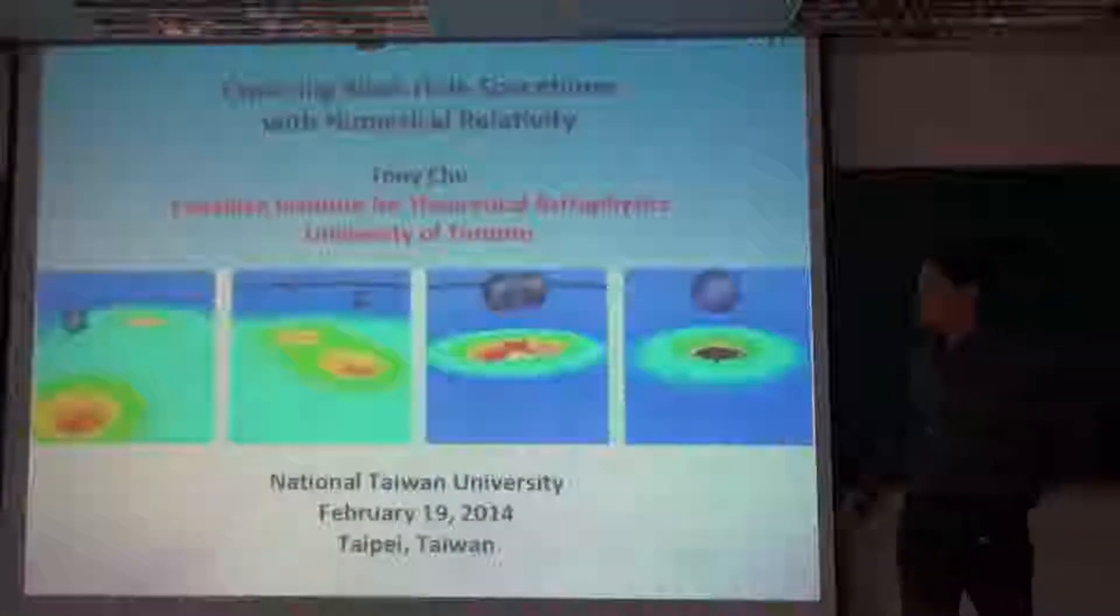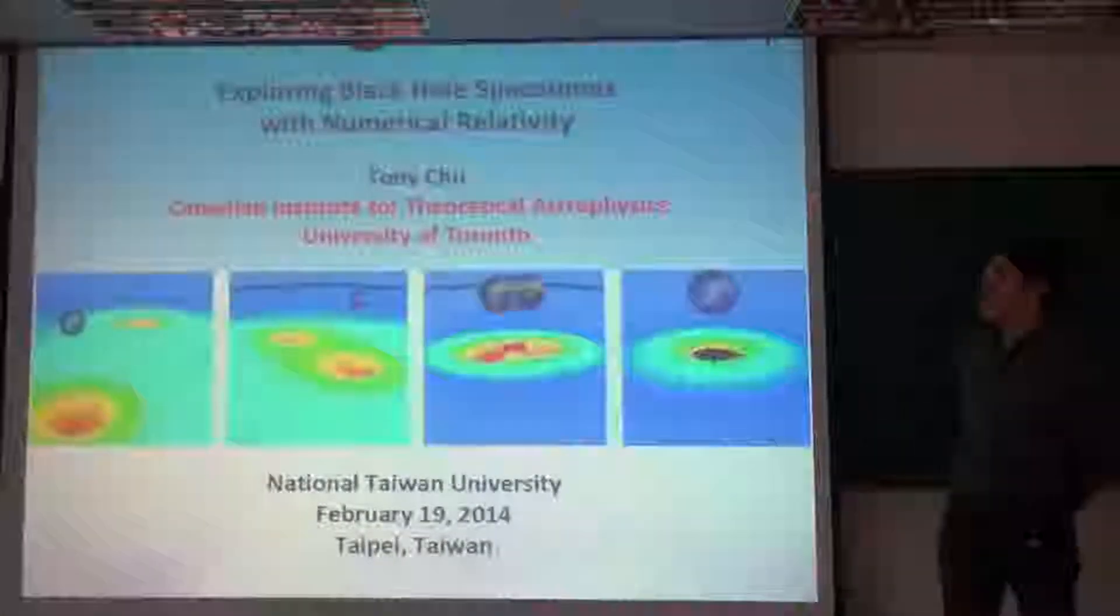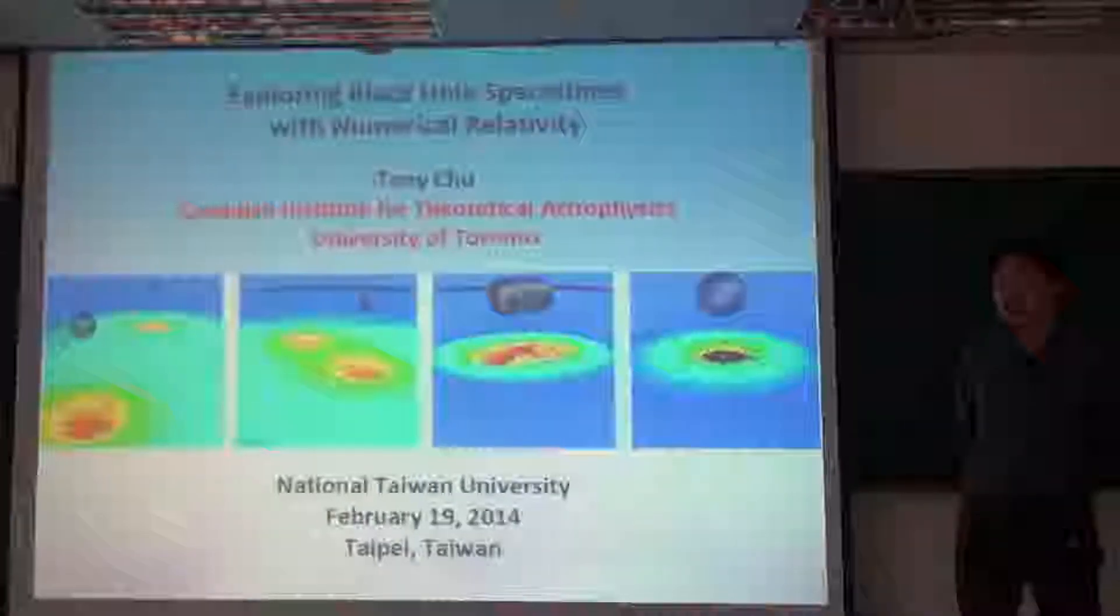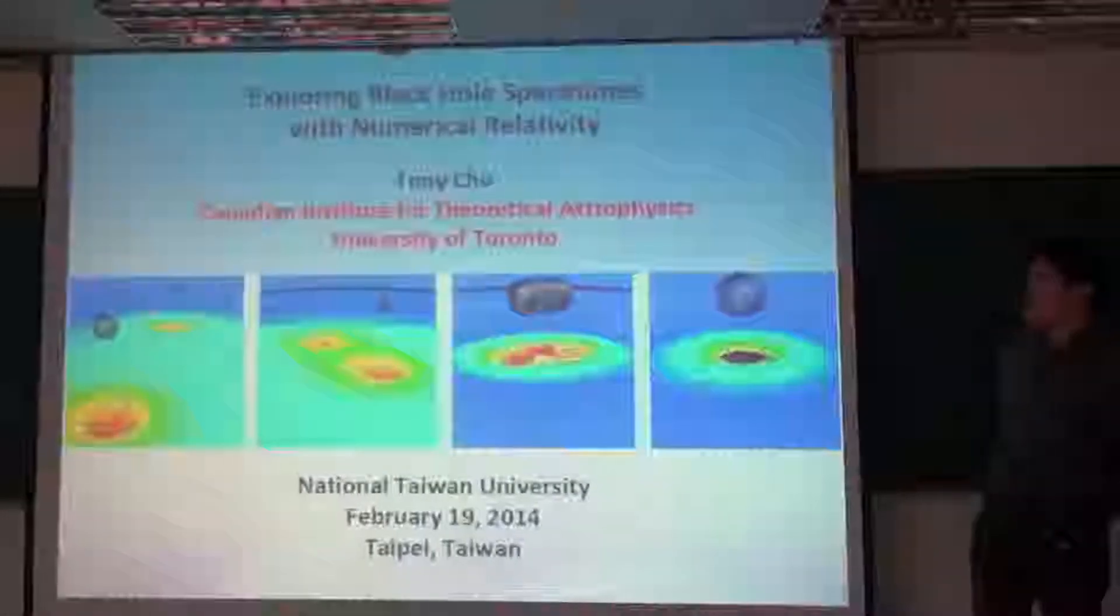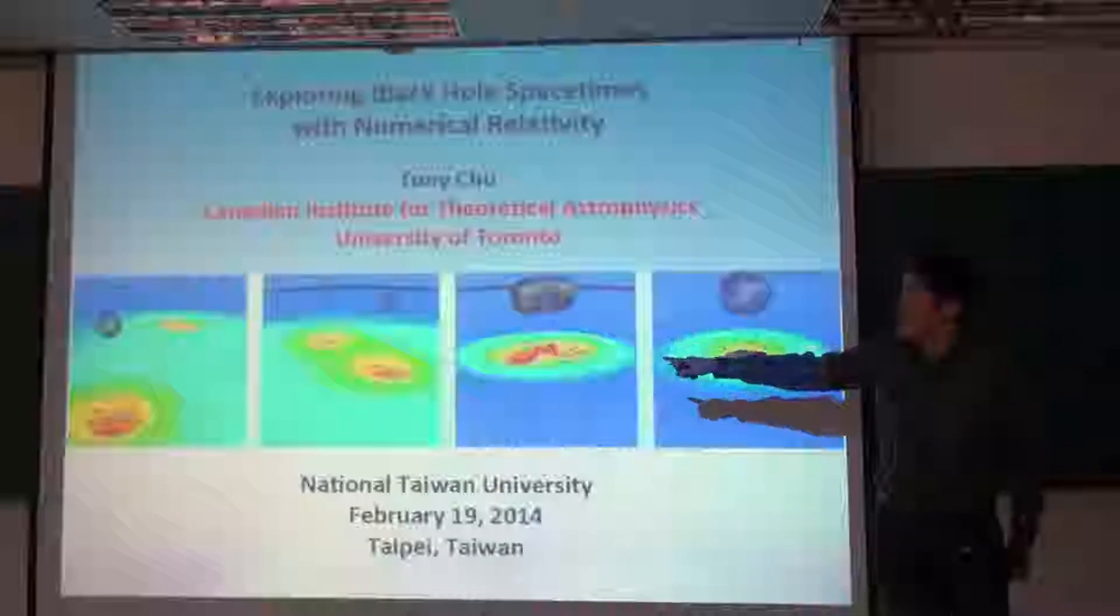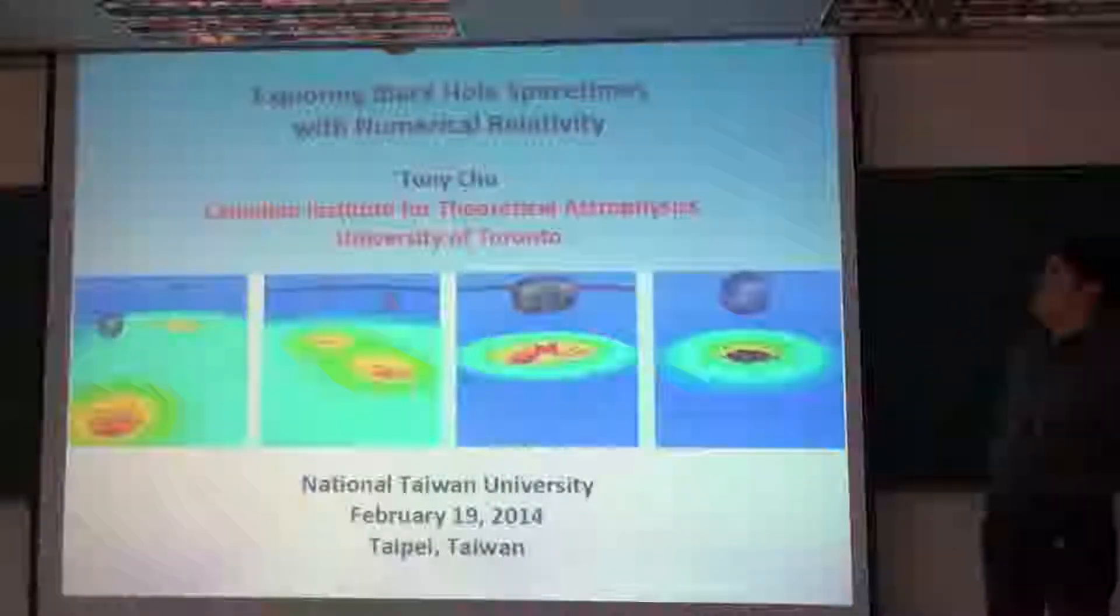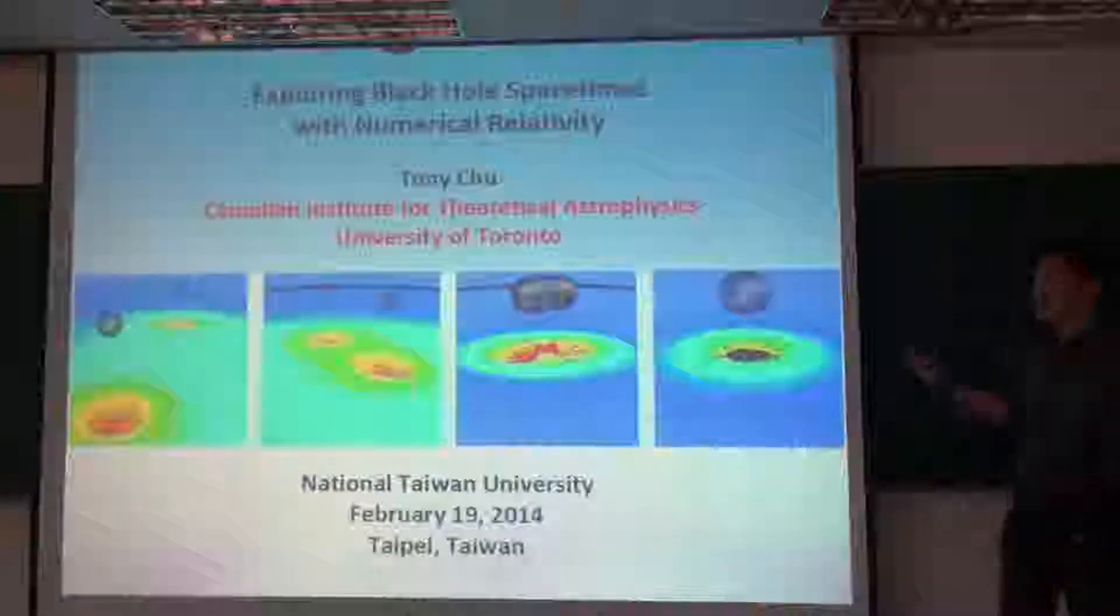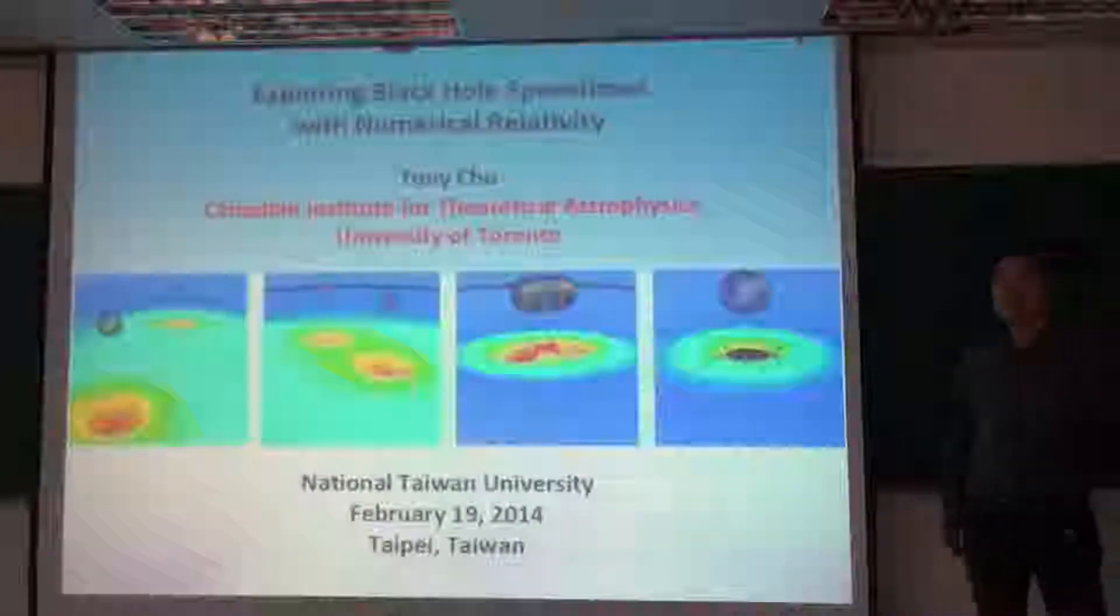Today I will be talking about exploring black hole spacetimes with numerical relativity. On this first slide here, I've shown a few snapshots of a typical numerical relativity simulation we do for two black holes that orbit around each other and then collide to form a single black hole. I'll talk more about this problem later on.